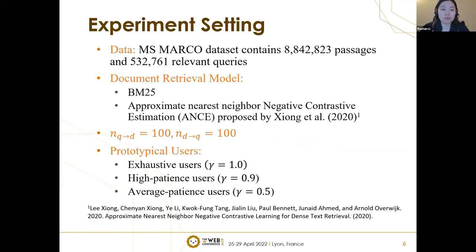For the experiment setting, we use the MS MARCO dataset, which contains 8.8 million passages and more than 500K relevant queries. For the document retrieval model, we consider two general classes: traditional retrieval models, using BM25 as an example, and embedding-based retrieval models, using the Approximate Nearest Neighbor Negative Contrastive Estimation, ANCE, proposed by Xiong and co-authors. We set the number of documents exposed by queries and the number of exposing queries per document both to 100. We consider three types of users: exhaustive users with persistence parameter gamma equals 1, high-patience users with gamma equals 0.9, and average-patience users with gamma equals 0.5.